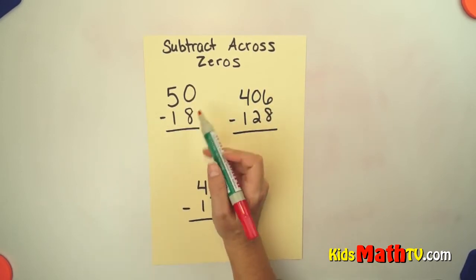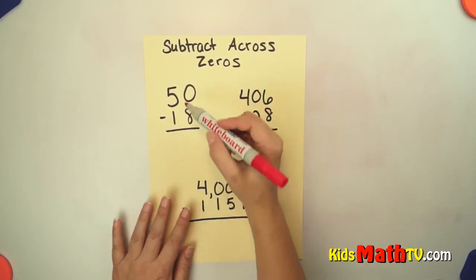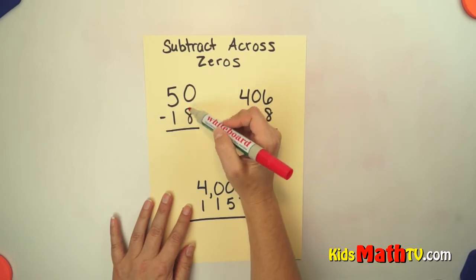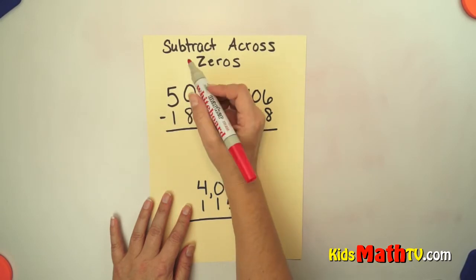So we have 50 and we're going to subtract 18 from it. And we know we can do that, but we're going to start with 0 minus 8. And we know if we have 0 we can't take 8 away from it, so we need to borrow.